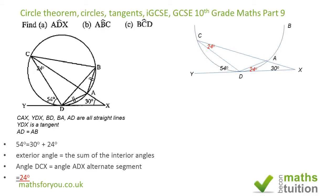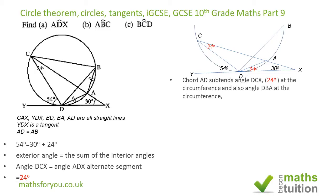Next, we introduce chords DB and BA. Chord AD subtends the angle of 24 degrees at point C. The same chord AD subtends an angle at point B, so those two angles must be equal. Therefore, angle DBA is also 24 degrees. We've found part of angle ABC, but we need the full angle.